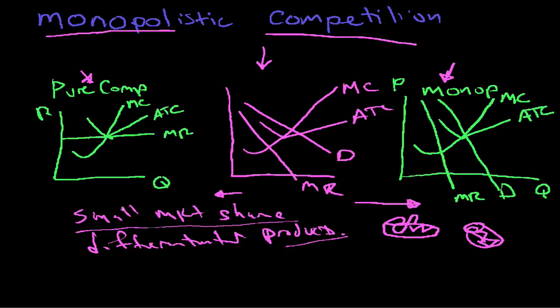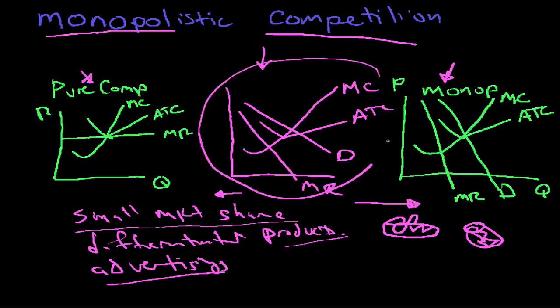What we've got here is small market share, differentiated products. We're going to talk about advertising as well. That's another hallmark of this kind of monopolistic competition market. That's it for this one. We'll go into monopolistic competition number two, and we'll talk more about the dynamics of what happens in this diagram. See you then!